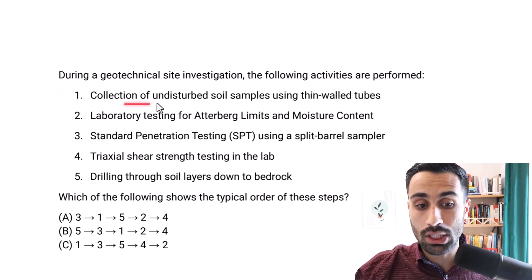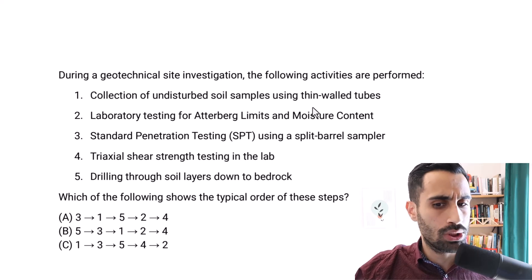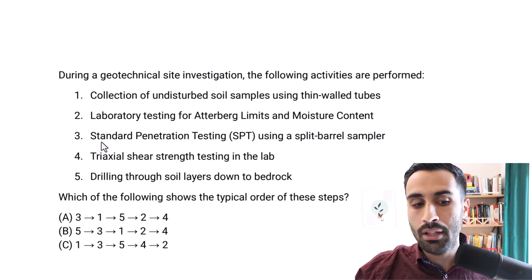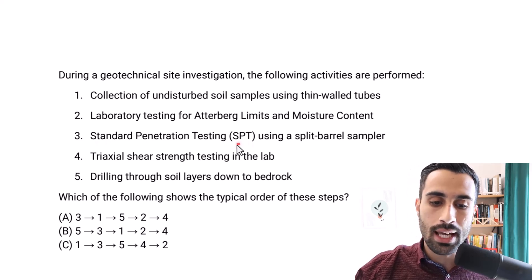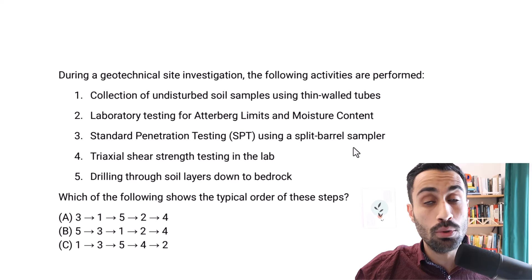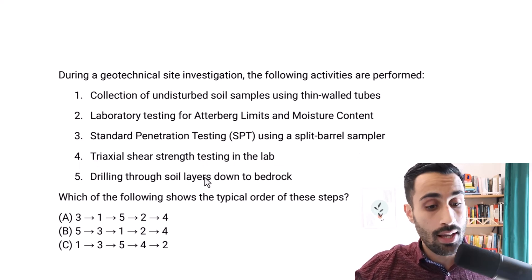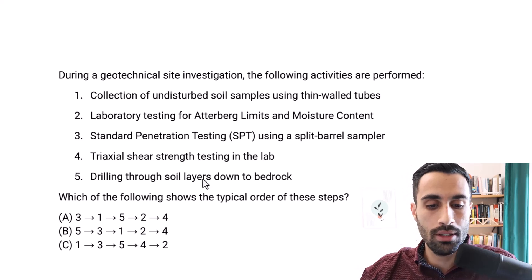Number one is collection of undisturbed soil samples using thin wall tubes. Number two is laboratory testing for Atterberg limits and moisture content. Number three is Standard Penetration Testing, the SPT test, using split barrel sampler. Number four is triaxial shear strength testing in the lab and number five is drilling through soil layers down to the bedrock.